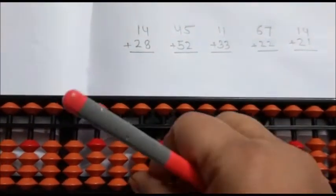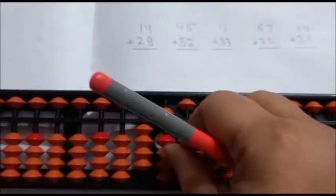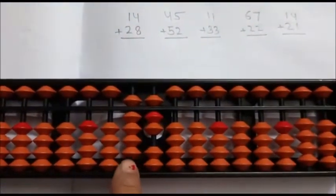Second question is 45 plus 52. 50 is direct. 2 is direct. Answer is 97.